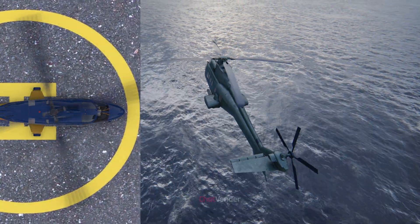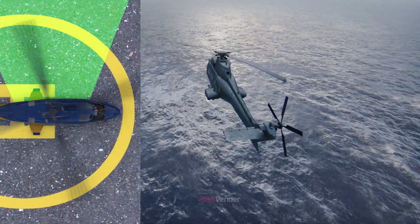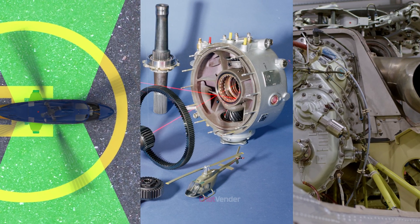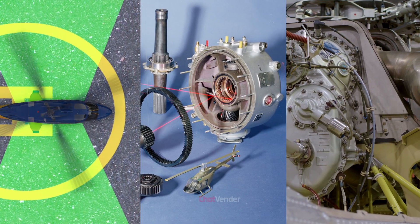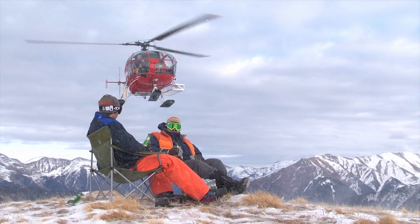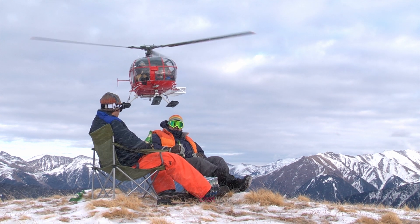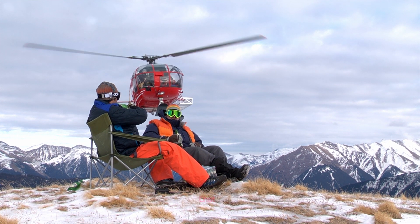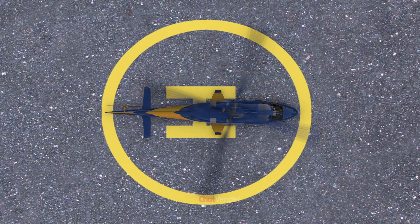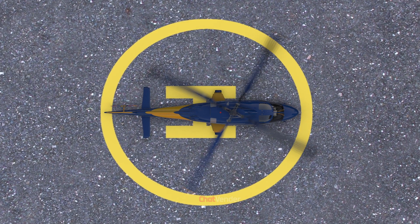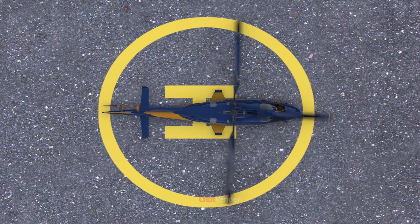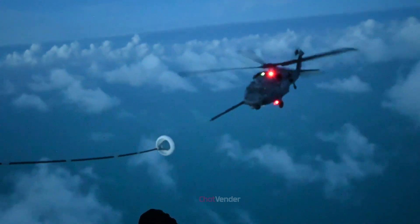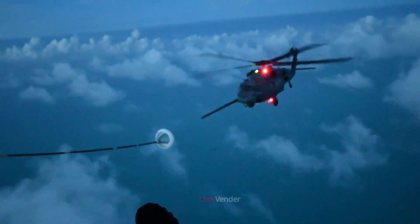The main components of a helicopter are the rotor system, the transmission, and the engine, comprising the main rotor and tail rotor. The rotor system is crucial for lift generation, maneuverability, and stability. The transmission transfers power from the engine to the rotor system, enabling the rotors to spin, and the engine provides the necessary power for helicopter flight.